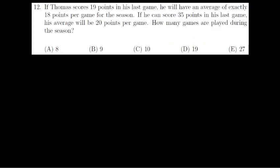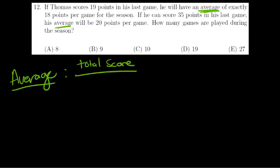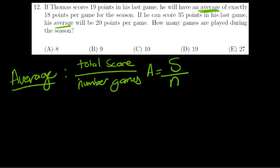Question 12: if Thomas is scoring 19 points in his last game, he will have an average of exactly 18 points per game. If he scores 35 points in the last game, he will have an average of 20 points per game. How many games has he played? We're looking at average calculations. The average is equal to the total score divided by the total number of games. Let's say score is S and N stands for the number of games, so his average is S over N.